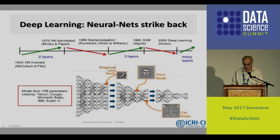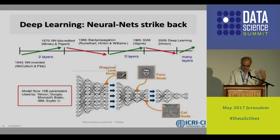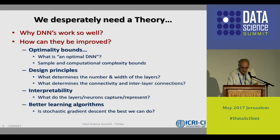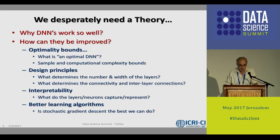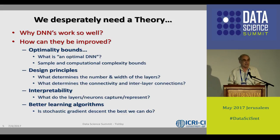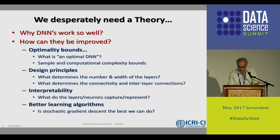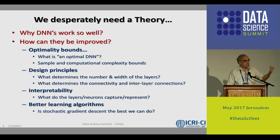This is of course very challenging and sad news for theoreticians, because we really didn't understand what's going on. As at least partly a theoretician in this area, this was a challenge. We desperately needed a theory — many versions of the theory. We needed optimality bounds, in the sense of how many examples are needed to achieve a certain generalization error. What actually characterizes the capacity — what kind of problems can be learned with deep neural networks? What are the design principles? How to interpret the network? We want better learning algorithms, but what we do now — stochastic gradient descent — seems rather crude. There must be something better.